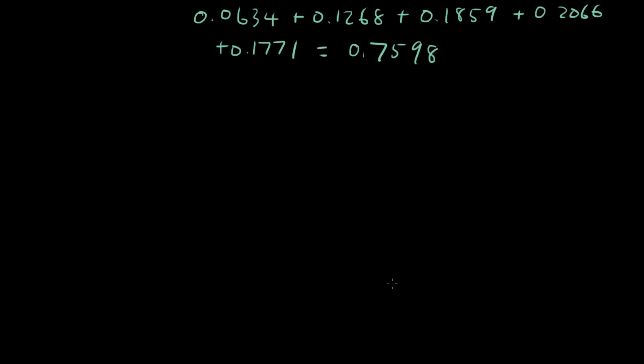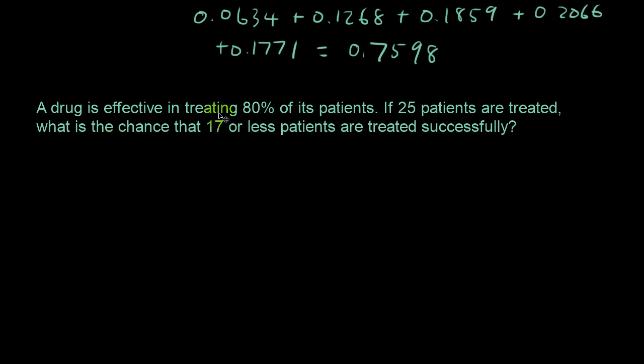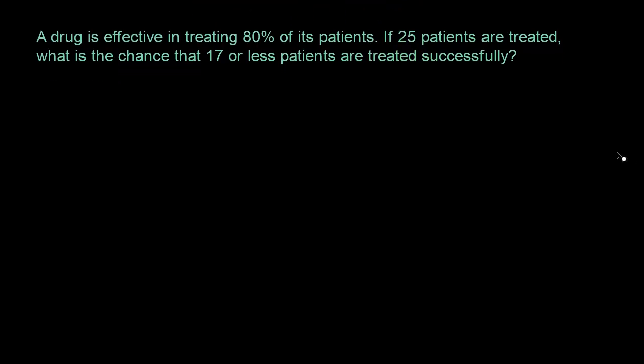A drug is effective in treating 80% of its patients. If 25 patients are treated, what is the chance that 17 or less patients are treated successfully? So what does this mean? It means that if we used our old table, we need to add up a lot of numbers. We need to add up, so on our table, let's say we go to n is 25 because 25 patients are treated. We need to add up the probability for when x is equal to 1, x is equal to 2, 3, all the way up to x is 17. We need to add up the probabilities.